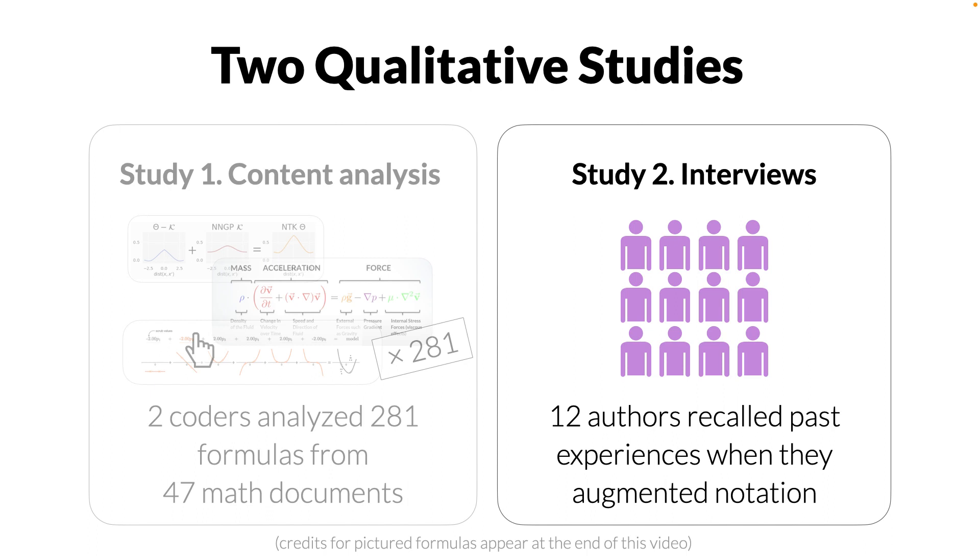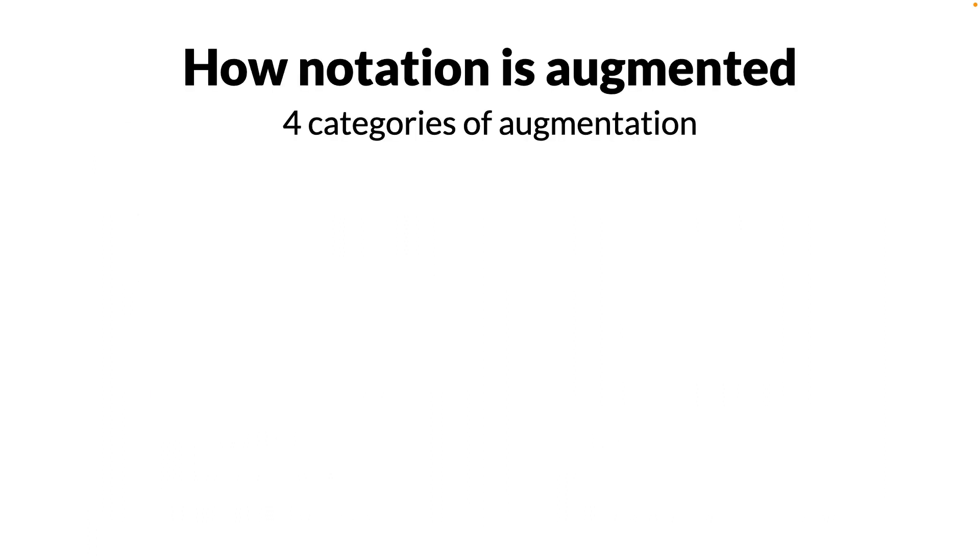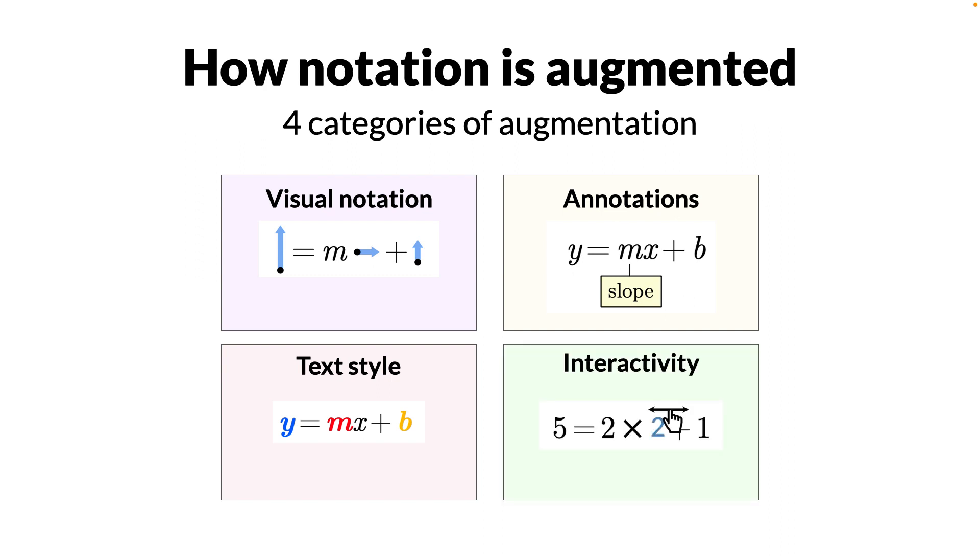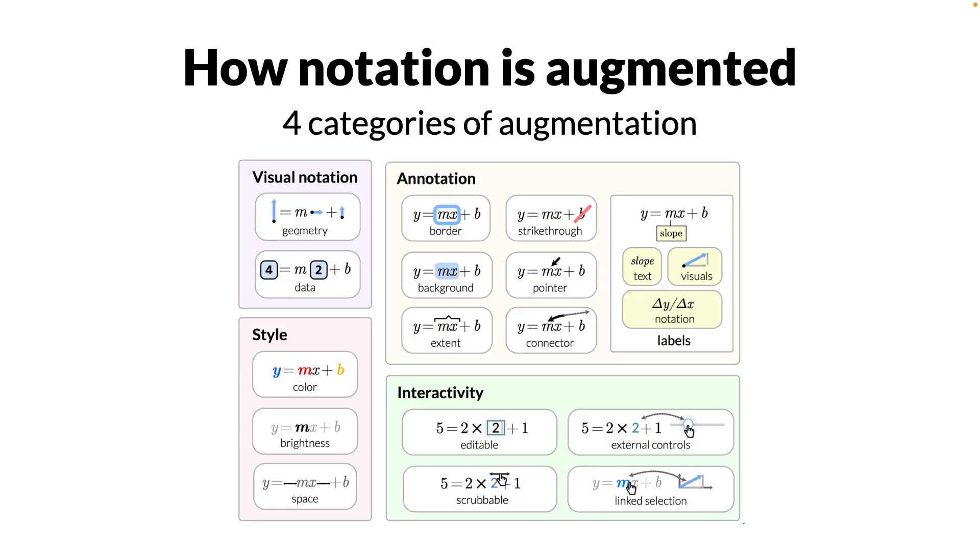Our first finding was a design space characterizing how notation is augmented by authors. At a high level, formulas were augmented in one of four ways. They were embellished with embedded visualizations, like geometric drawings, in place of expressions. Their text was styled with color, space, and font adjustments. They were annotated with overlay and underlay marks, like labels. And they were imbued with interactivity. Across these four categories of augmentation, there were over 16 distinct kinds of augmentations.